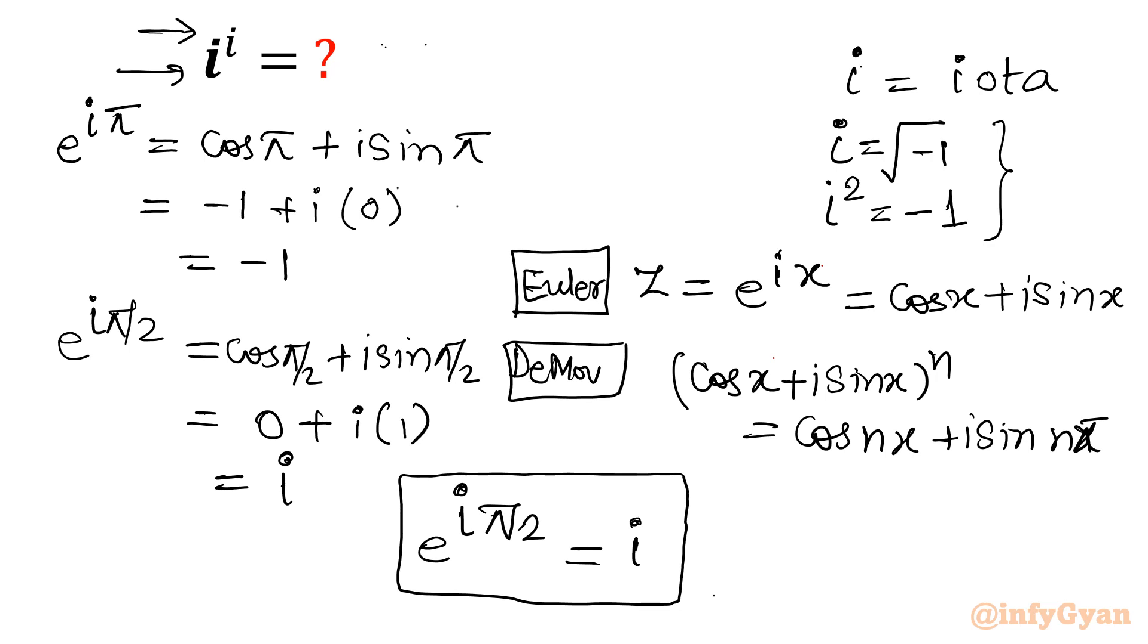So in base i^i, in base i I will write e^(iπ/2). Let me write: (e^(iπ/2))^i. Now you can easily understand.